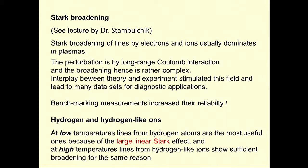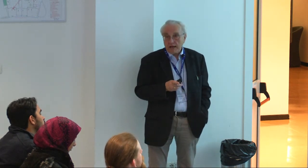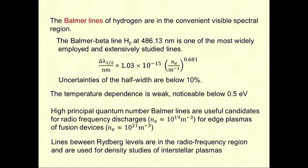The hydrogen-like lines are the best known, because they are broadened by the linear Stark effect. The Balmer beta line is a very nice line to use. Characteristic uncertainties are below 10%, and the temperature dependence is very weak, so you don't need to know the temperature accurately — it only matters if you have temperatures below about 0.5 eV. High principal quantum number Balmer lines are useful candidates in the radio frequency range for hydrogen plasmas in fusion devices, the ionosphere, and so on.